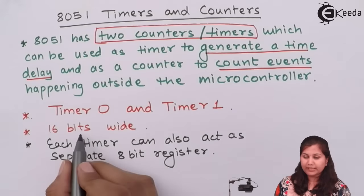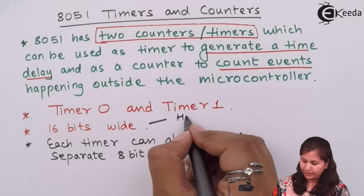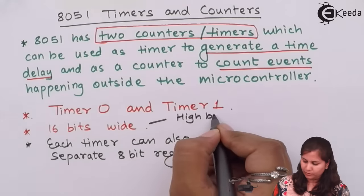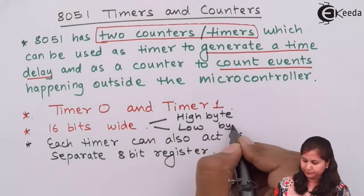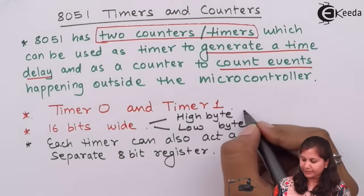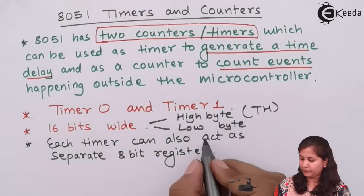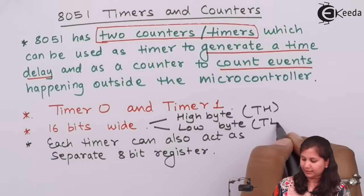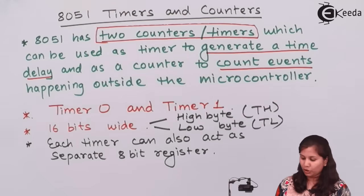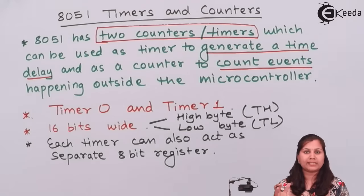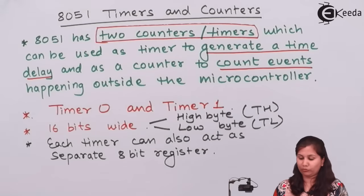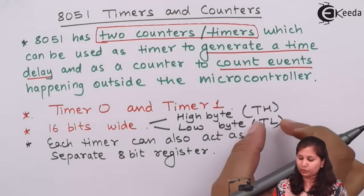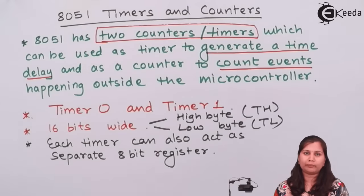The 16 bits are divided into 8 bits for the high byte and 8 bits for the lower byte. The higher byte is denoted as TH and the lower byte is denoted as TL. So if we want a 16-bit number, we can use the whole timer, and if we want only 8 bits, we can use the higher order or lower byte timers separately.